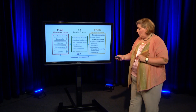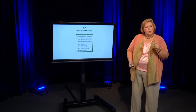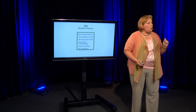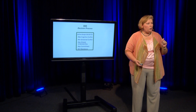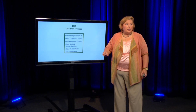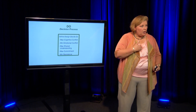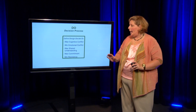In the do process, it's very important that you as the leader know what you want to achieve. As a reminder, you want to maximize the cognitive conflict, which means keeping your team focused on ideas and thoughts. You want to minimize the emotional conflict, which means keeping people who have differing ideas from focusing on each other, but staying focused on the task at hand.